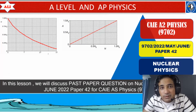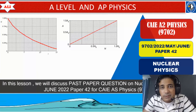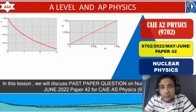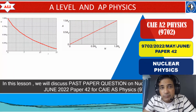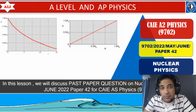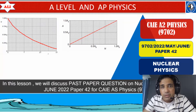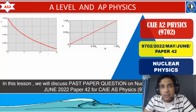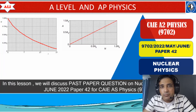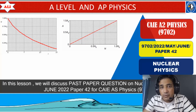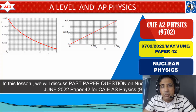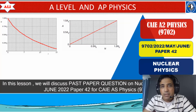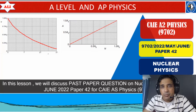Welcome to A-Level and AP Physics. In today's lesson, we will discuss a typical type of question on nuclear physics from a June 2022 paper 4 variant 2. We will discuss some important points about nuclear physics, especially how to sketch different types of graphs — number of nuclei against time, and activity against number of nuclei. Let's study together and improve together.